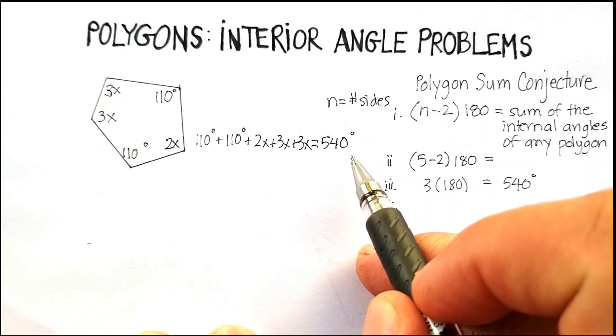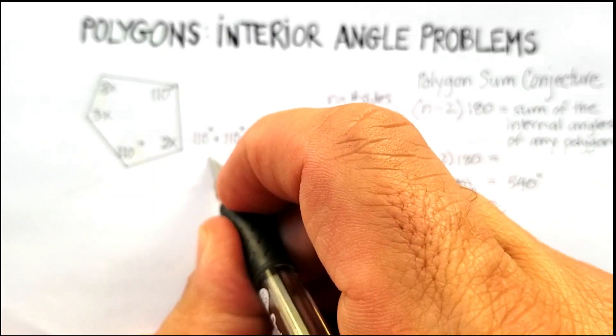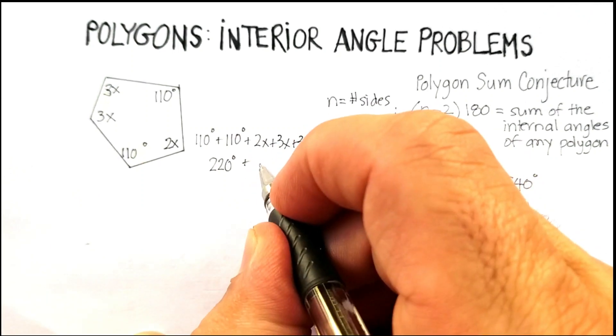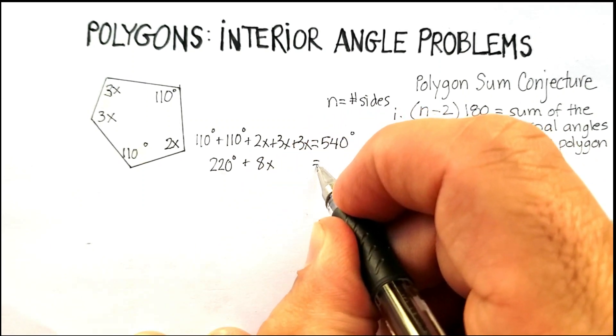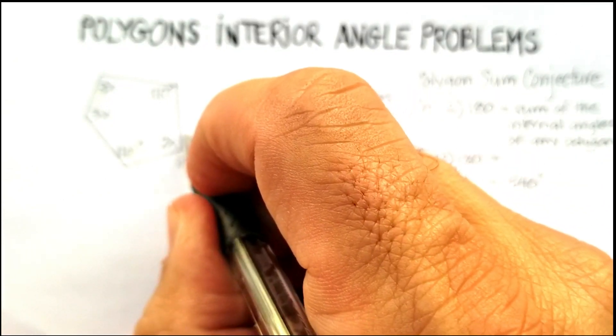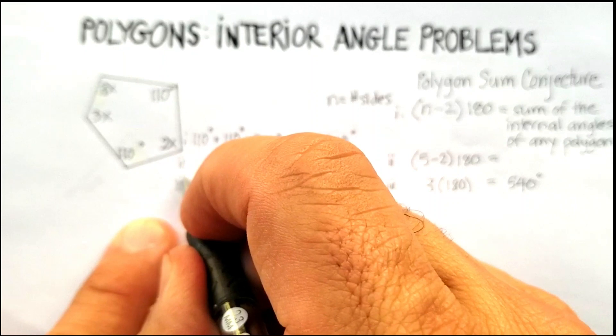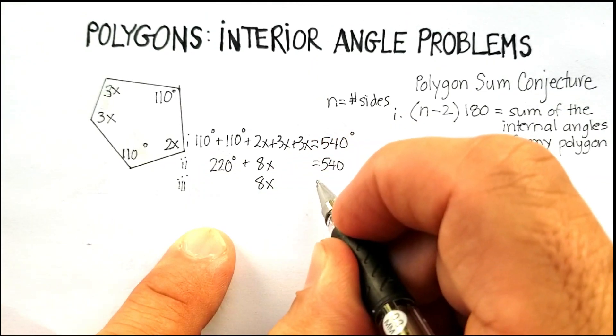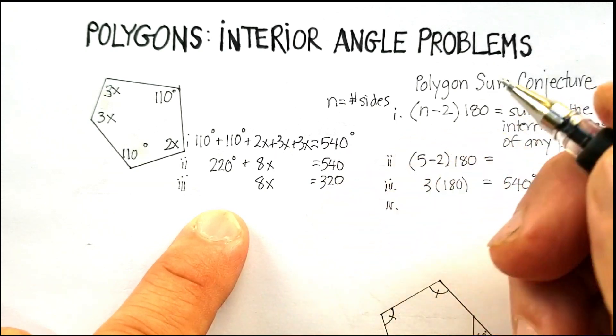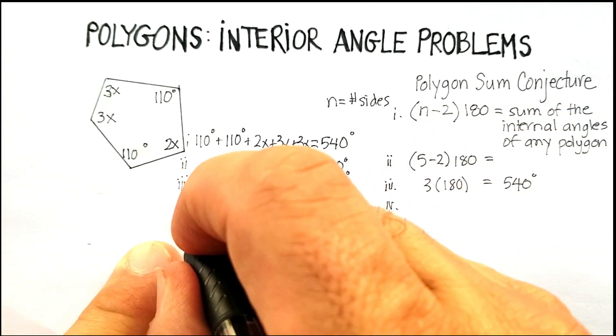And that should equal 540. Now let me gather my like terms. This is going to be a simple algebra expression. 110 and 110 gives me 220. 2x plus 3x plus 3x gives me 8x. Let's keep this organized. I'm going to subtract 220 from both sides, and I'm going to get 8x is equal to 320.